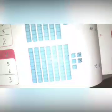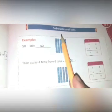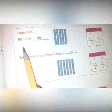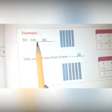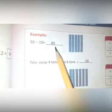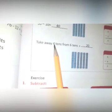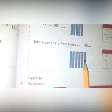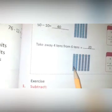Now the next page, page number 57: subtraction of tens. Look at the example: 50 minus 10. You have five rows of 10, so you will cut one row — remaining are one, two, three, four, so you write 40. Another example: 60 from 6 tens means 60, and you have to cut 4 tens. When you cut 4 tens, the remaining are 2 tens, so 2 tens means 20.